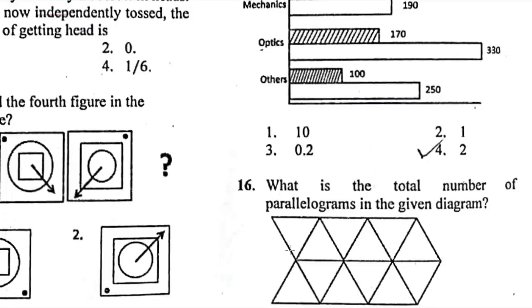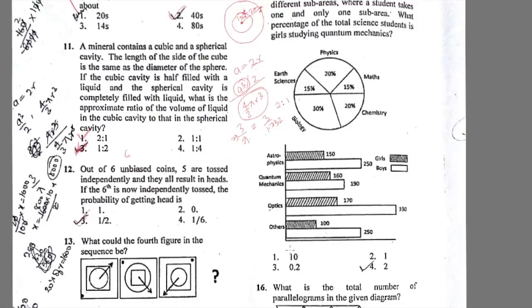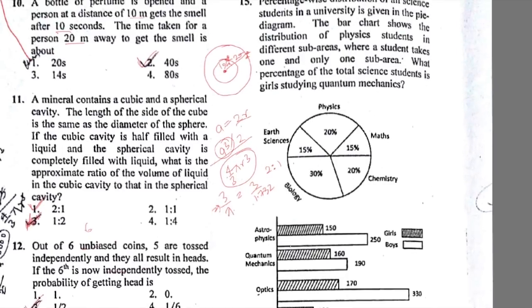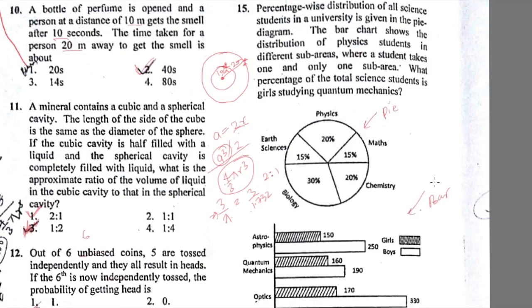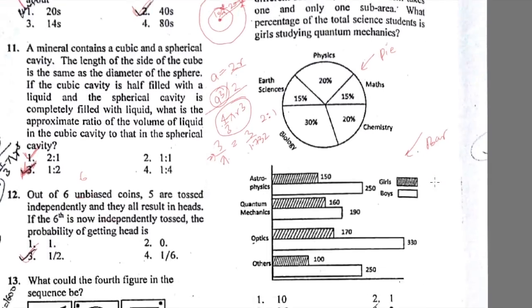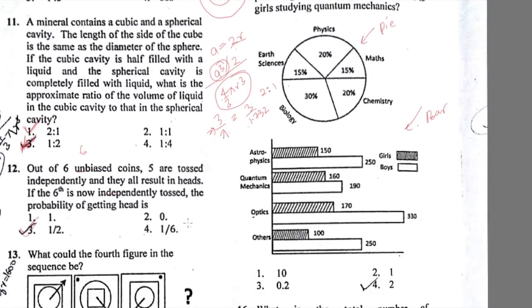This one about percentage wise distribution of science students in a university, you have two types of graphs. One is pie chart and other is bar graph. Your answer will depend on study of both these graphs. I solved it out and found option 4 as the correct option.